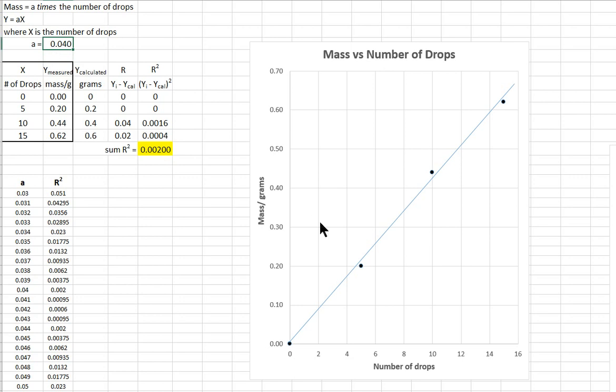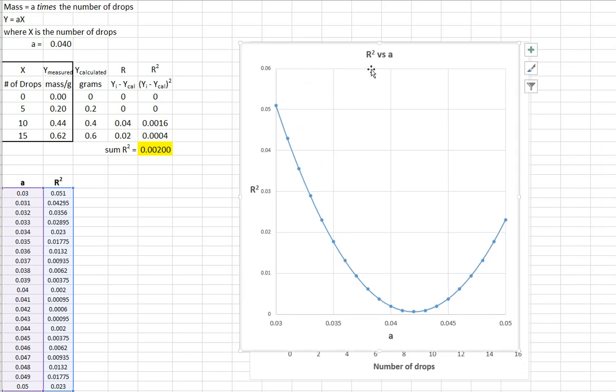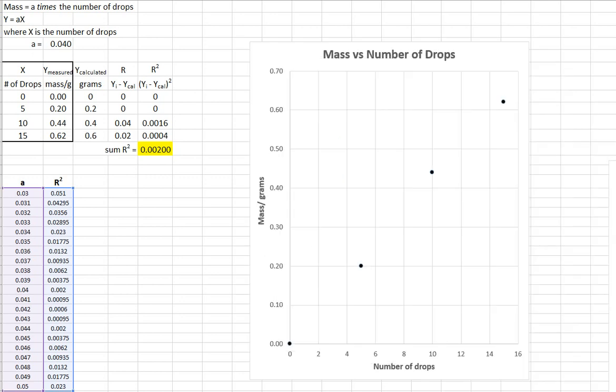Now, another way to do this is to actually calculate r squared based on different values of a. And here I have a plot of r squared as a function of a. And you can see that at some point it reaches a minimum. And that point is 0.042 on this graph here. So that's one thing you can do.